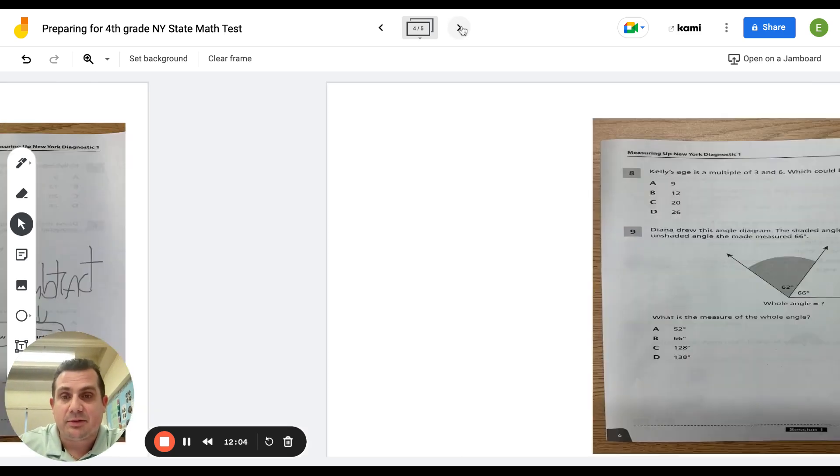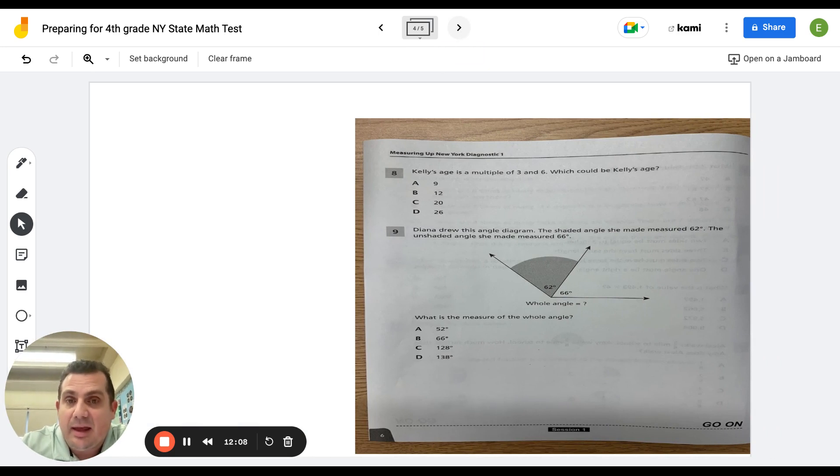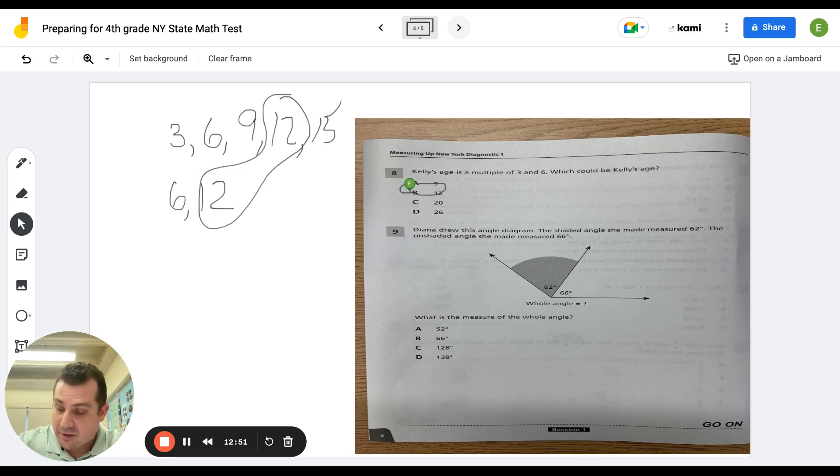Okay. Let's go to the last two questions here. Number eight, Kelly's age is a multiple of three and six. Which could be Kelly's age? Well, if Kelly's age is a multiple of three and six, let me list the multiples of three and six and see what age could it be. Well, three. If I count by threes, you get six. So a multiple of three and six is six, but six isn't one of your choices. So I'm going to keep going. Three, six, nine, twelve, fifteen. I'll stop for now. Six, six, twelve. Oh, found it. Twelve, twelve, and twelve. Twelve is a multiple of three and six. So that is your answer. That is your multiples.